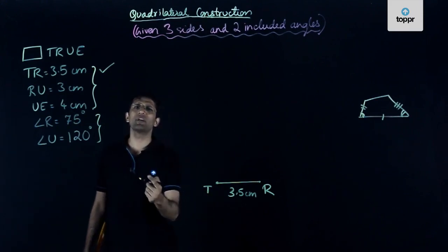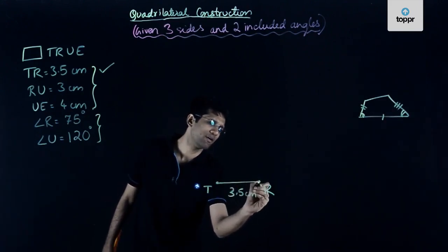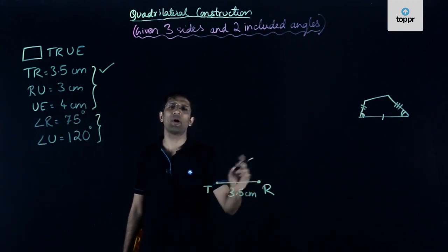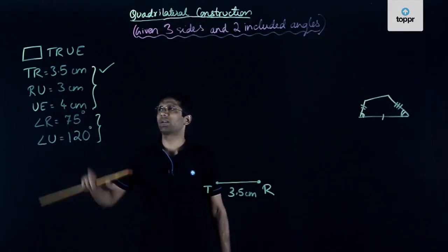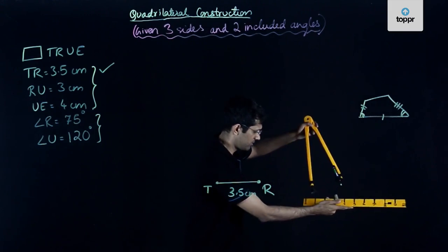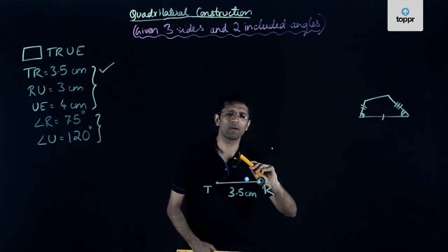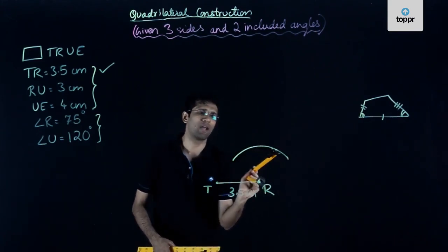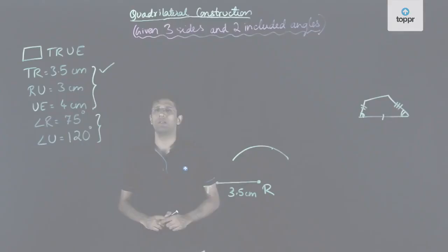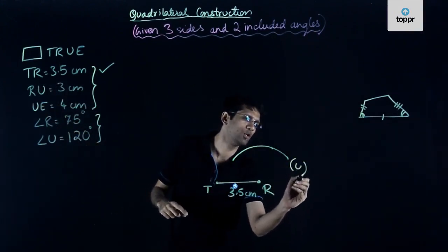The next piece of information is RU equal to 3 cm. Point R is known, so point U will lie at a distance of 3 cm from point R. I take the compass, measure a radius of 3 cm, take R as center, and draw an arc of radius 3 cm. Point U will lie somewhere on this arc.